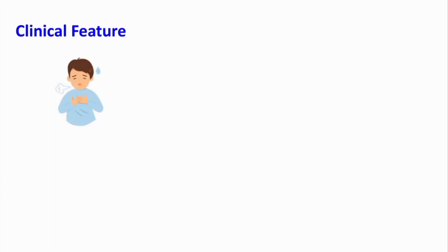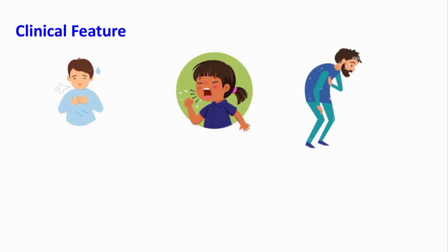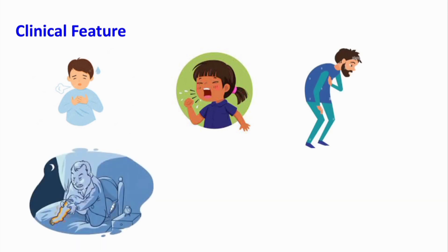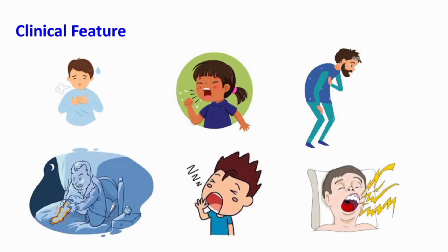Clinical features include dyspnea, fatigue, periodic leg movements especially at night, daytime sleepiness, and loud snoring. Cheyne-Stokes respiration is worse in the supine position or when moving from supine to lateral body position.